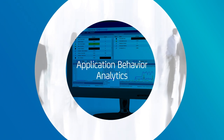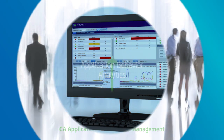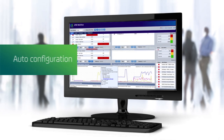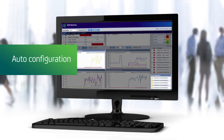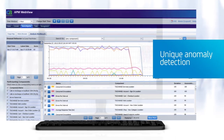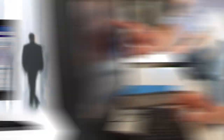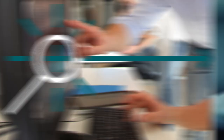Application Behaviour Analytics are built into CA Application Performance Management. This means auto-configuration and unique anomaly detection, based on pattern matching, give your IT team a head start on finding problems before they impact your end-users.